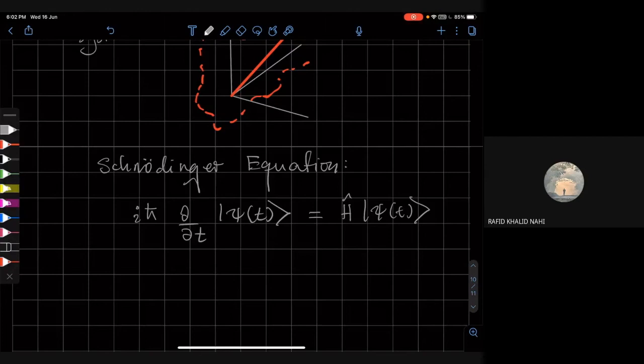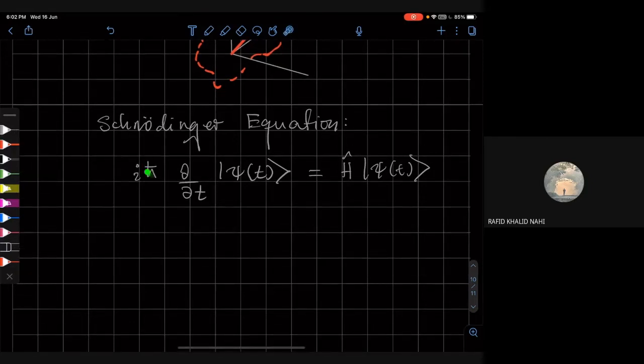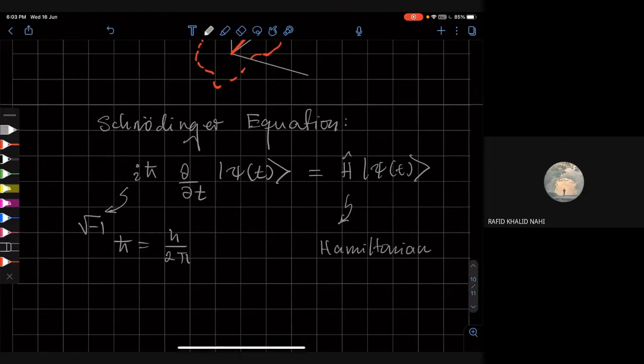So this is the Schrödinger equation. H bar is Planck's constant - it's actually what is known as Dirac's h, or h bar is what Planck called h divided by 2π. And i is the imaginary unit, square root of minus 1. And H is a special Hermitian operator called the Hamiltonian, which has eigenvalues with the interpretation of energy.